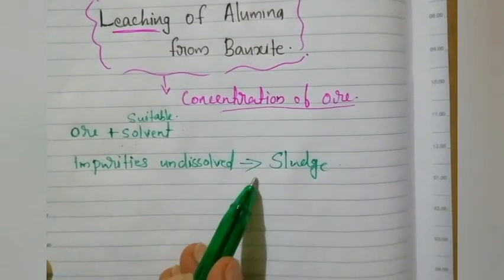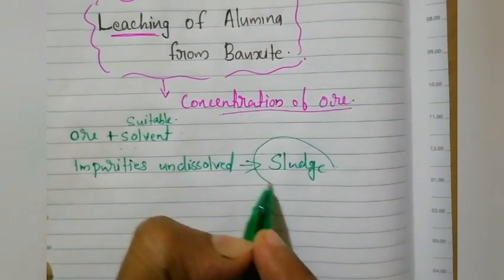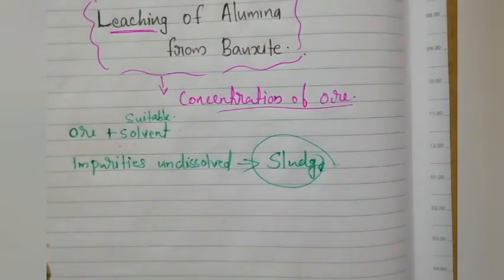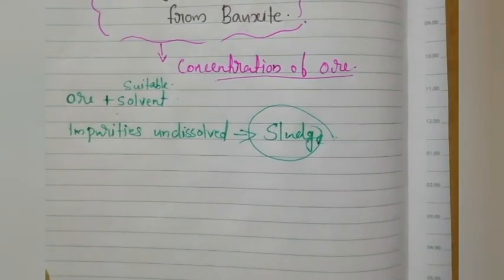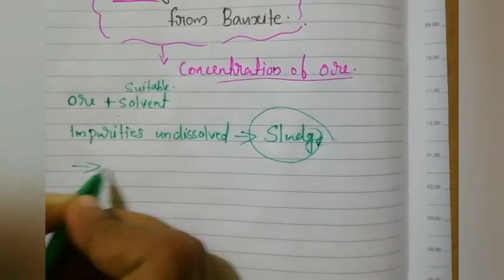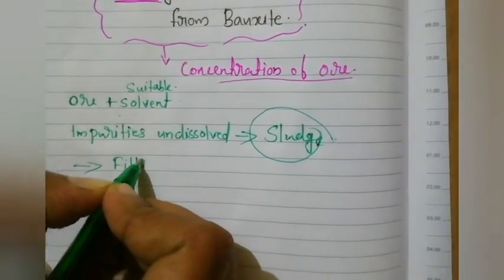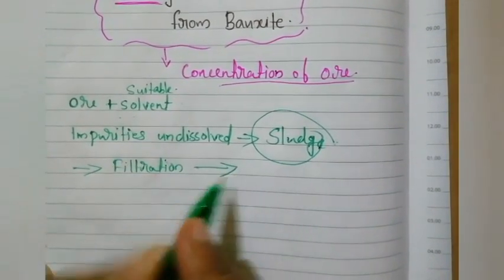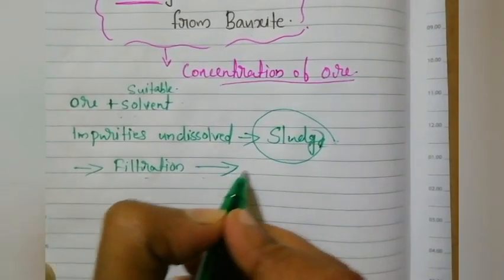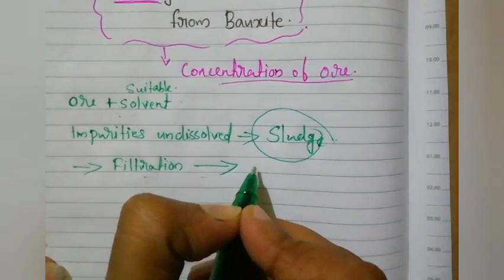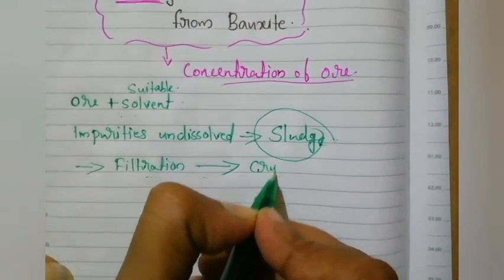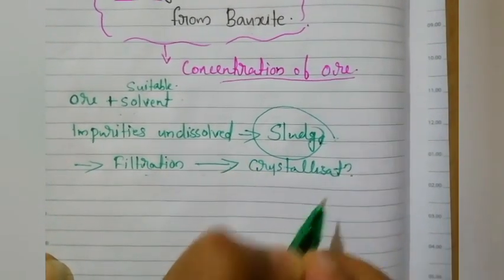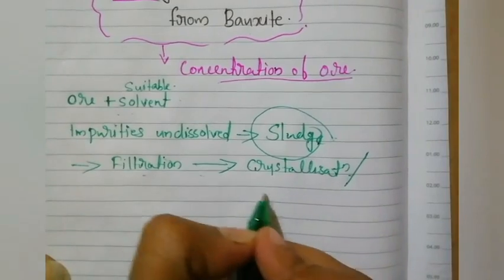If you have the term sludge, it means impurities. Now we have a sludge formed. Next, we will filter. The ore particle should dissolve in the suitable solvent, and there will be undissolved impurities — that is called sludge — and that should be removed through filtration. We will get a clear filtrate. From that solution, we should again obtain the ore particle by either crystallization or precipitation.